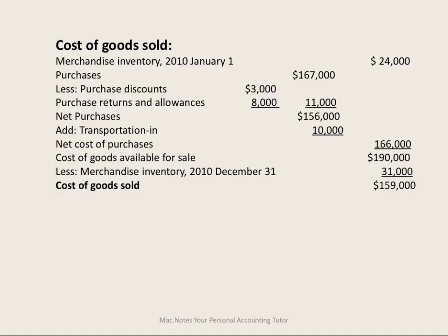To summarize, cost of goods sold under the periodic inventory system starts with beginning inventory at the beginning of the year, add purchases, subtract discounts, subtract returns and allowances to get net purchases, then add transportation in to get the net cost of purchases. Beginning inventory plus net cost of purchases gives the cost of goods available for sale. Subtract ending inventory, and in this example the cost of goods sold was $159,000.